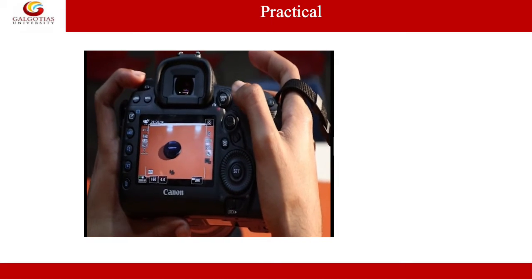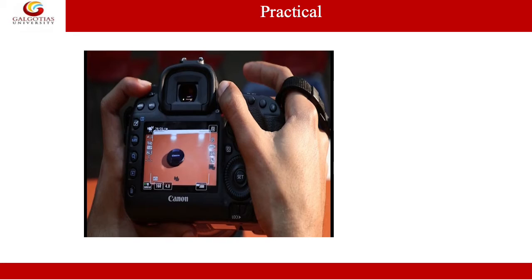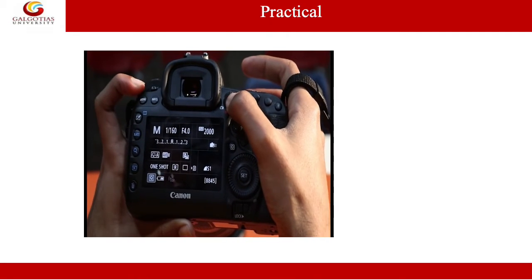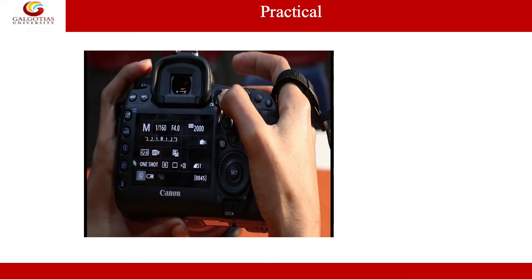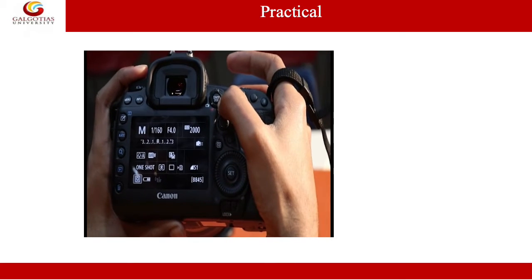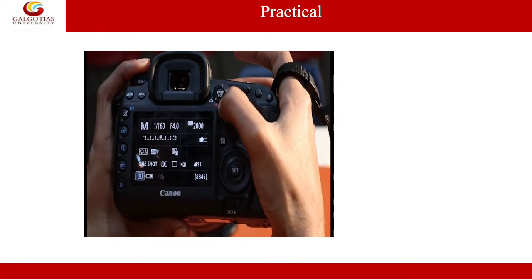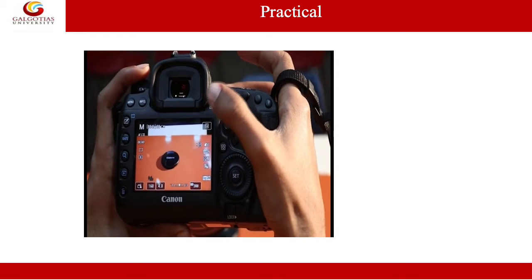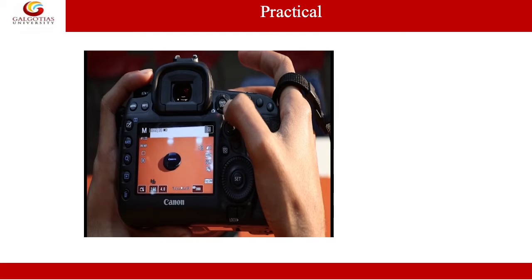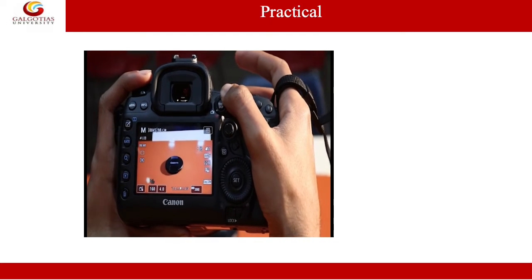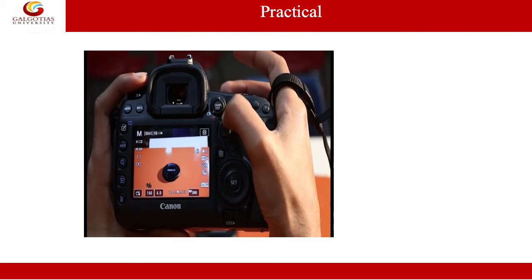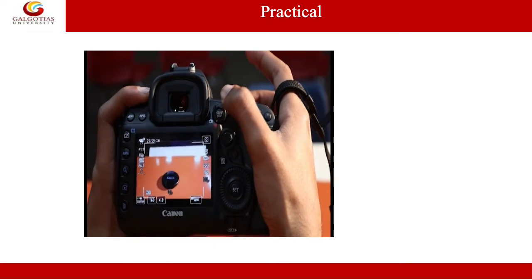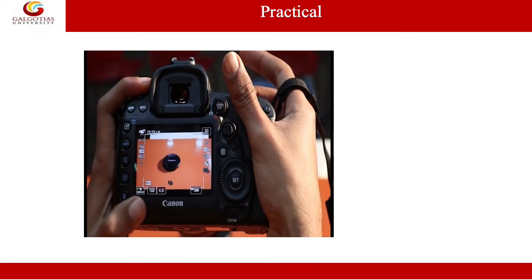Now we will try to understand the different types of menu settings in recording mode. In order to change the recording settings, we have to adjust our camera from still photography mode to video mode. This is the live view mode of still photography. When we change the camera by pressing or sliding this button to recording mode, we have these options.